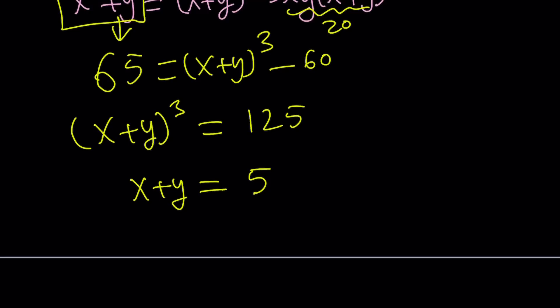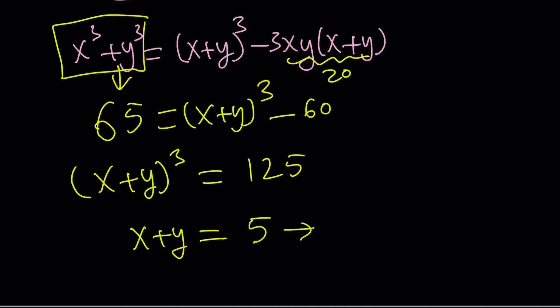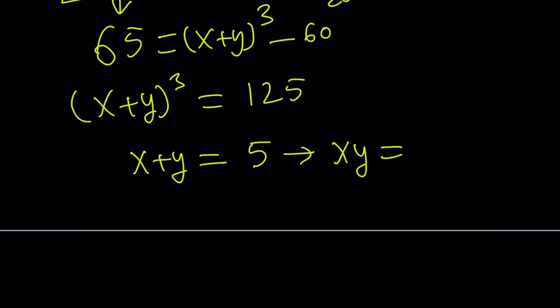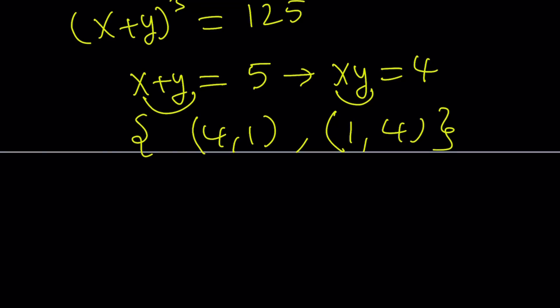Since x plus y is 5 and xy equals 20 divided by 5 which is 4, we have two numbers whose sum is 5 and product is 4. Those numbers are 4 and 1. So the solution set is x equals 4, y equals 1 and x equals 1, y equals 4.